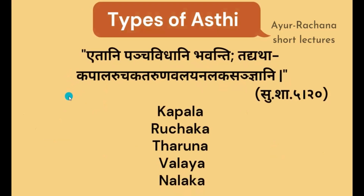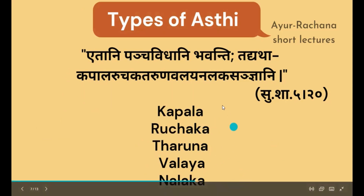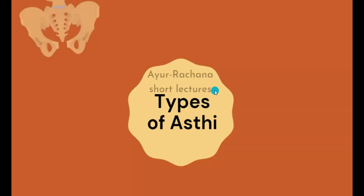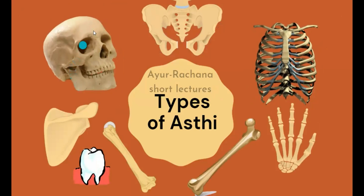Now the types of asti. According to Sushruta Acharya, we have five types of asti named as kapala, ruchaka, taruna, valaya, and finally nalaka. From the images, you can make out the different types of asti. Let's determine which bones come under each category. What do we mean by kapala asti?